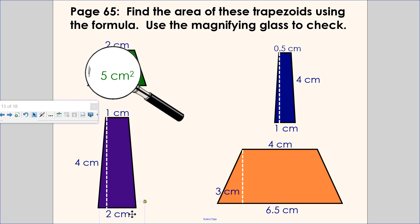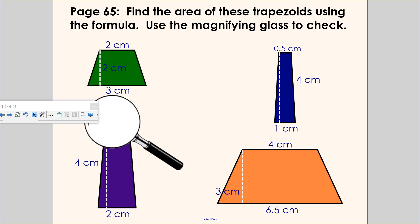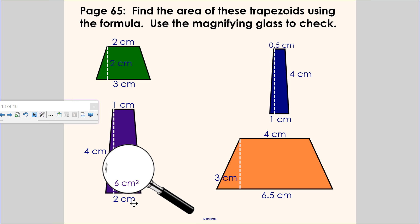I added the two bases, 1 and 2 is 3. Half of 3 is 1.5, 1.5 times 4, that would be 3. No, it's actually 6. Let me see why I got this wrong. You know what? Stop doing it in your head.